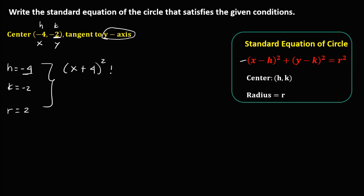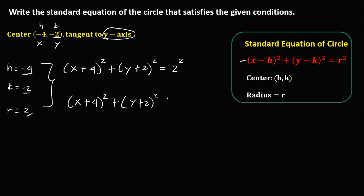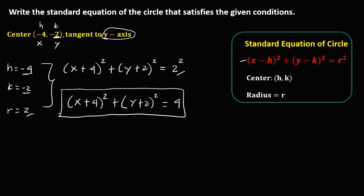Plus y — since k is negative 2, this becomes positive 2 — to the power 2. Equals r, that's 2, to the power 2. Simplify: x plus 4 to the power 2, plus y plus 2 to the power 2, equals 2 to the power 2, which is 4. This is now the standard equation of the circle.